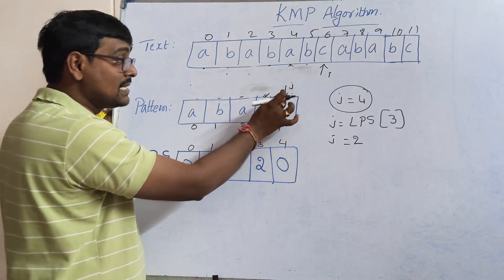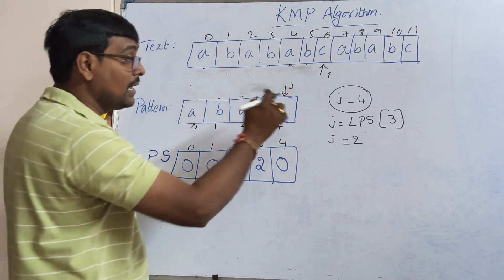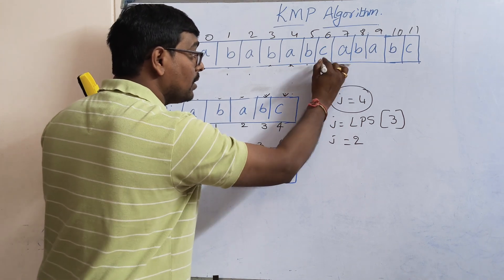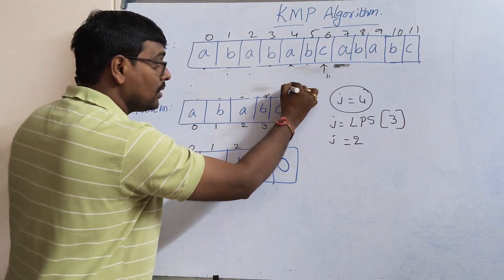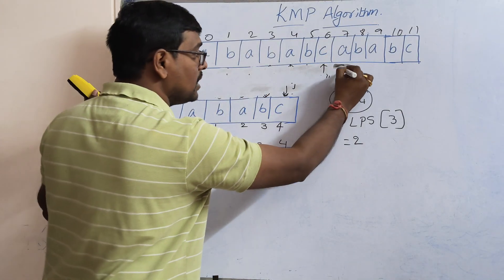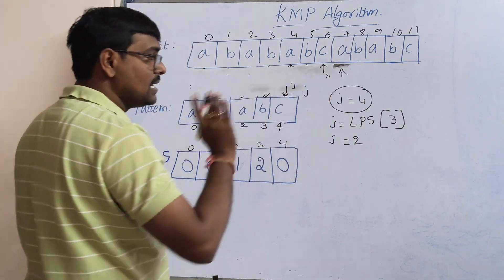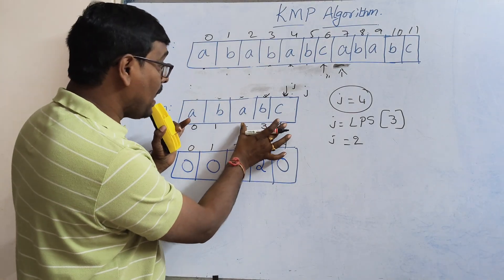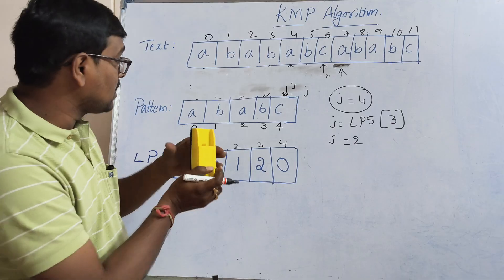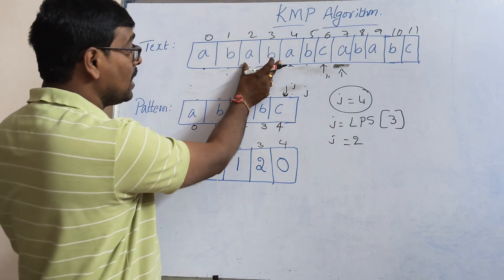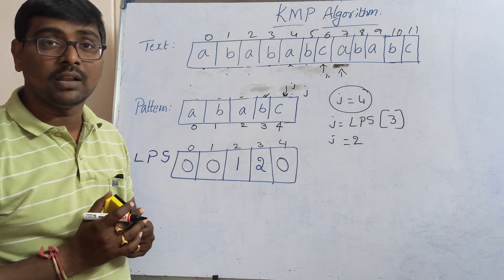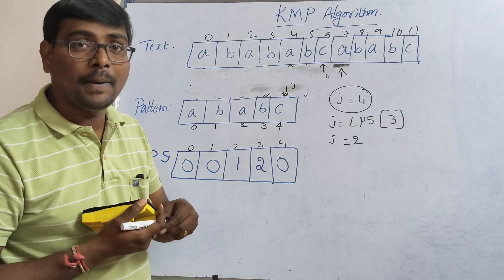This is the 'i' value and this is the 'j' value. 'c' is compared with 'c' - again matching. Now at here, this is 'j', 'i' and 'j'. Again there is a matching, so 'i' points to this position, 'j' is ended. That means my complete pattern is available. Observe: a-b-a-b-c, a-b-a-b-c. My complete pattern is available.